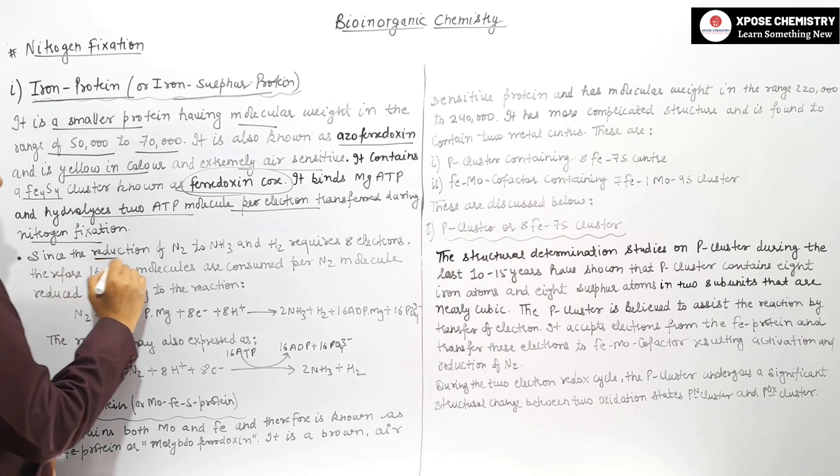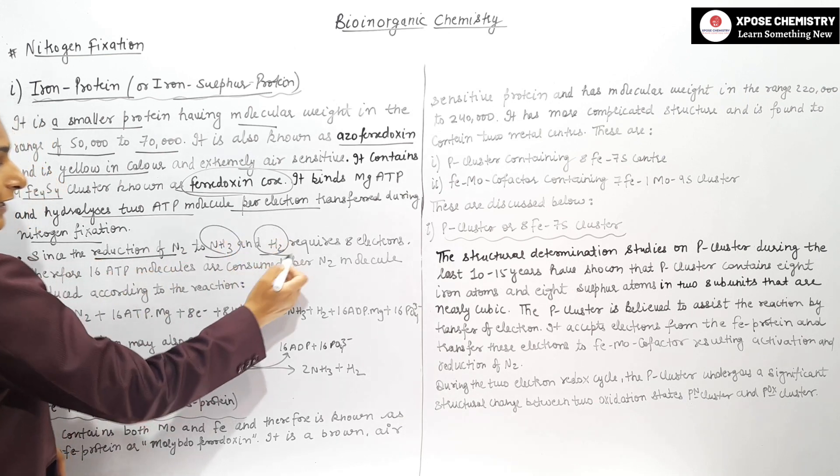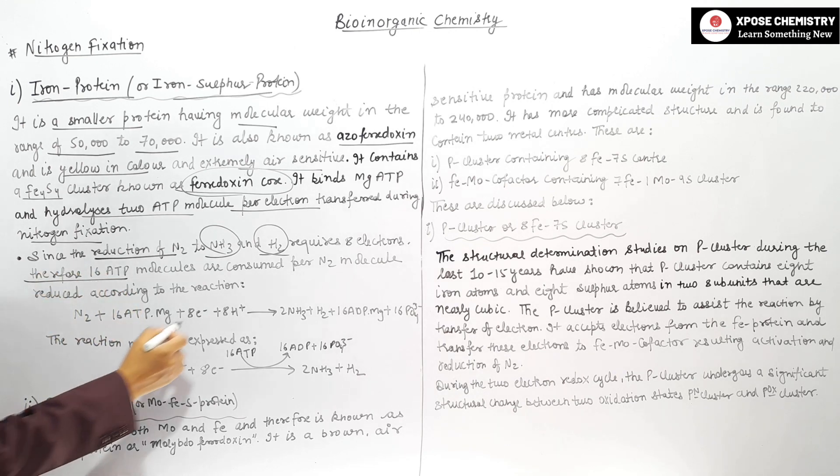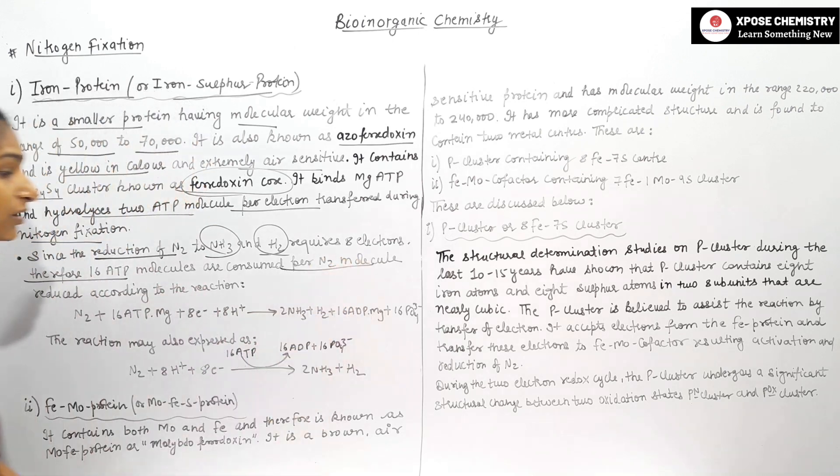The reduction of nitrogen to NH3 and H2 requires eight electrons, so 16 ATP molecules are consumed per N2 molecule reduced.